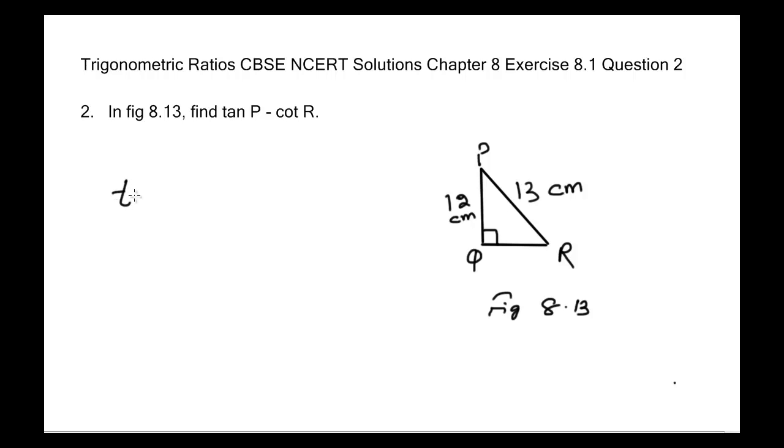The tangent of any given angle is equal to opposite side divided by adjacent side. So, opposite side to angle P is QR, and adjacent side to angle P is equal to PQ. Now we don't know the value of QR.